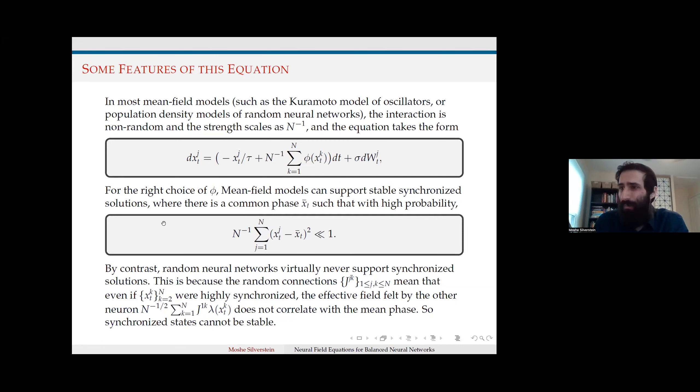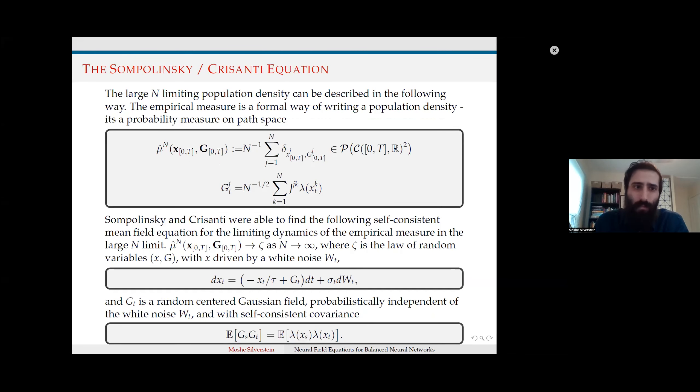To make this more rigorous, we can define an empirical measure over the stochastic path space. Capital G can be thought of as the net afferent field and is a random centered Gaussian, probabilistically independent of the white noise with self-consistent covariance. Sompolinsky and Crisanti found a self-consistent mean field equation for the limiting dynamics of such an empirical measure in the large N limit. They were able to find a solution and distribution even though at first glance it's a highly self-consistent system of equations.